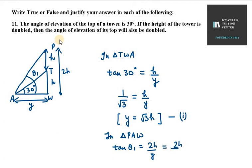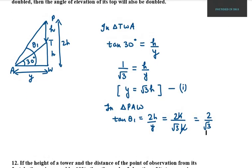You can easily put the value of y here in equation number 2. So this will be 2h over √3h. h cancels. Now what have you left? 2/√3. So our tan θ₁ is equivalent to 2/√3.